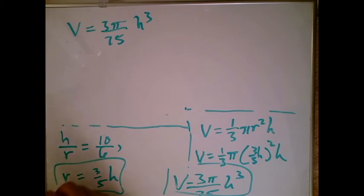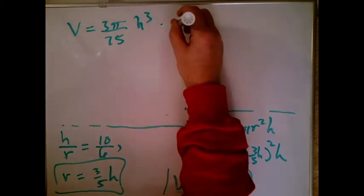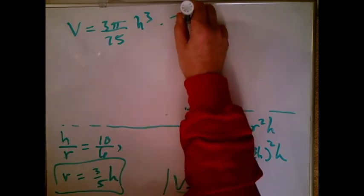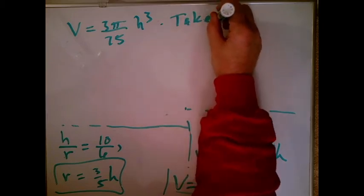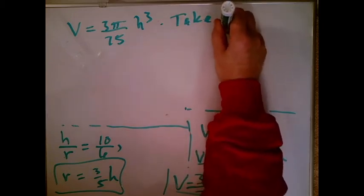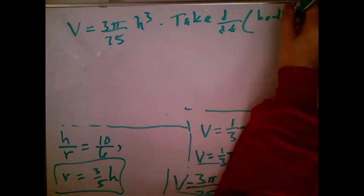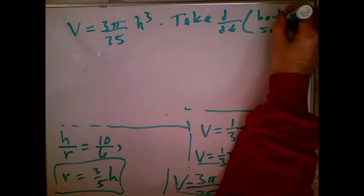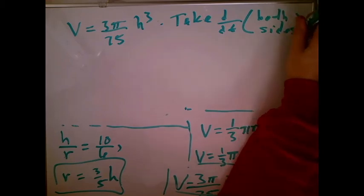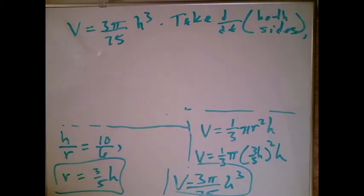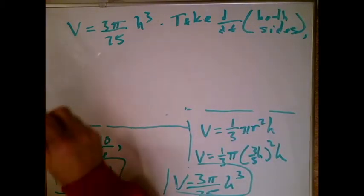Now I want to take the derivative with respect to T of both sides. And I should write that down so people know what's coming. Like that. Here we go. The derivative of the left-hand side, the derivative of V, is just dV/dt.